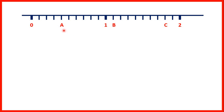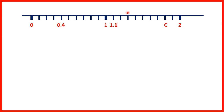Let's work out the values of A, B, and C on this number line. We have zero, one, and two labelled, and to get from zero to one, we have ten little lines, so each line represents one tenth. A is on our fourth line, so that's four tenths or 0.4. For B, we have to be careful — this comes after one, and each line is one tenth, so this value is one and one tenth, which we write as 1.1. And C is eight lines after one; each line was one tenth, so C represents 1.8.